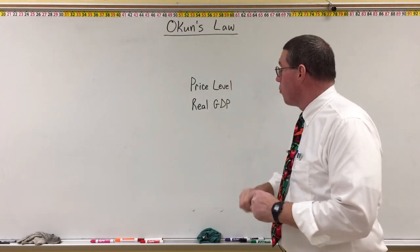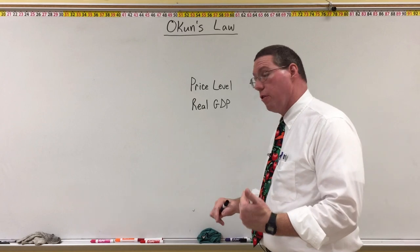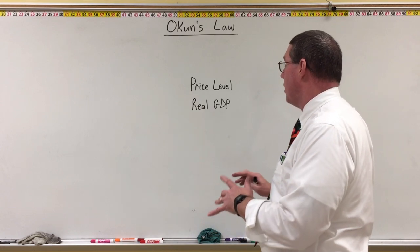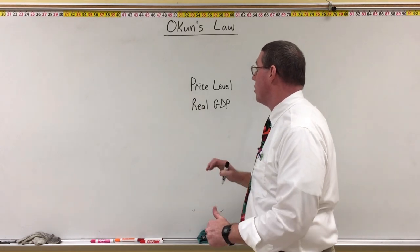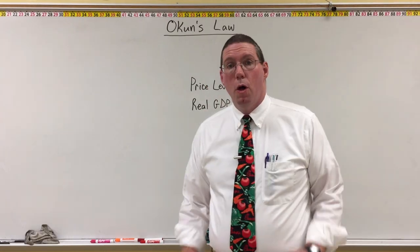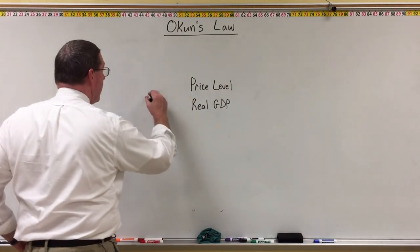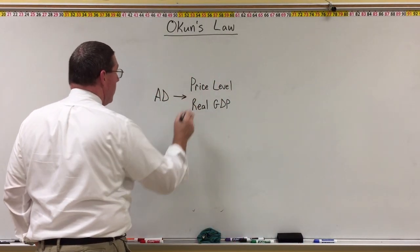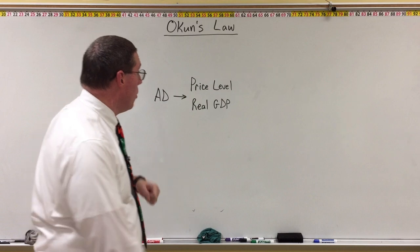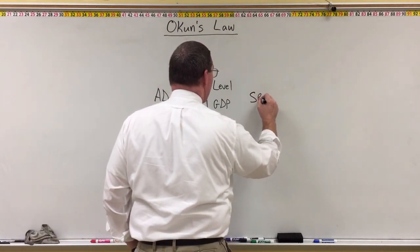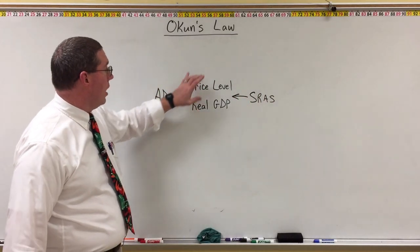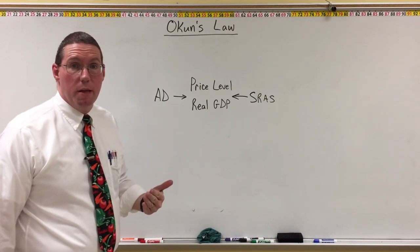What we have just recently learned over the last few lessons is we've learned about the aggregate market, and one of the things we learned is that based on changes in the aggregate market, we will see changes in the price level and in real GDP in the economy. When there are changes in aggregate demand or changes in short-run aggregate supply in the economy, that will lead to changes in the price level and real GDP.